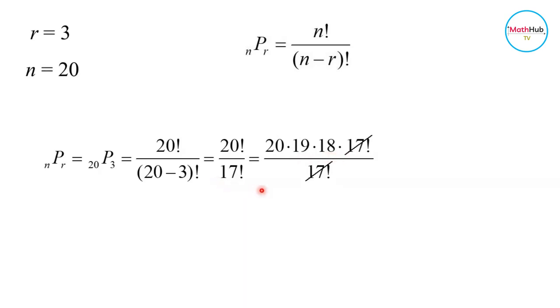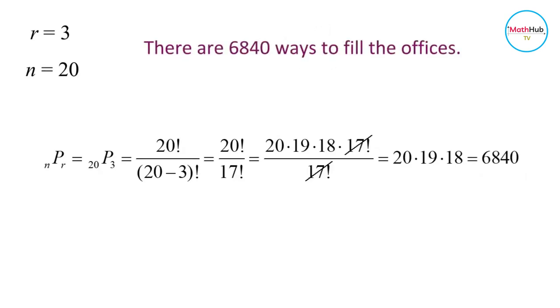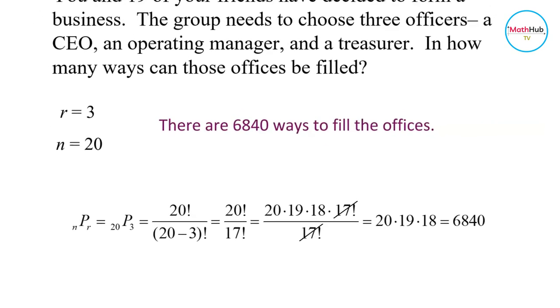Since the denominator is equal to 17 factorial, we can cancel 17 factorial from both numerator and denominator. And that leaves us 20 times 19 times 18, which is equal to 6840. So therefore, there are 6840 ways to fill those offices.